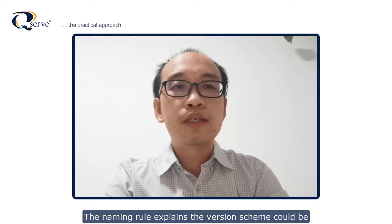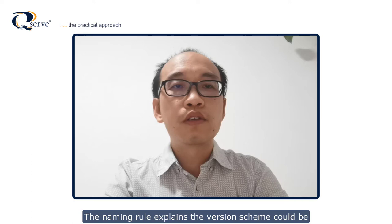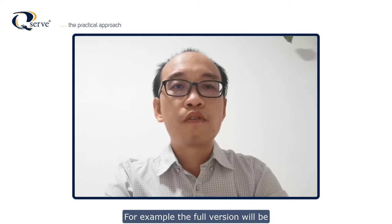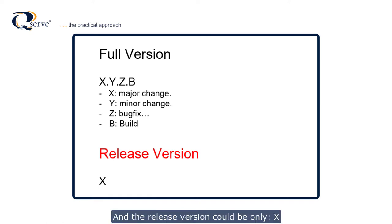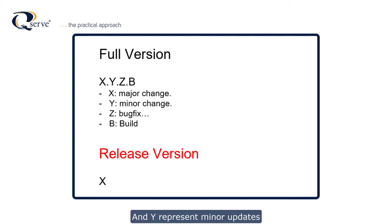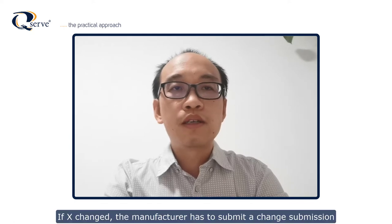The naming rule and version scheme could be, for example: the full version will be x.y.z.b, and the release version could be only x. The digit x represents significant updates of the software, y represents minor updates, z means bug fix, and b represents the build.